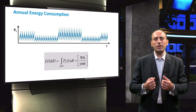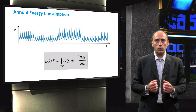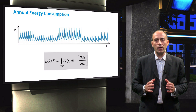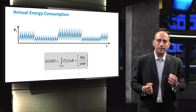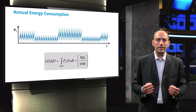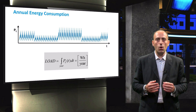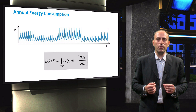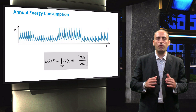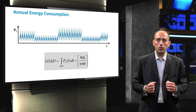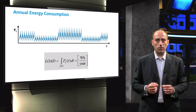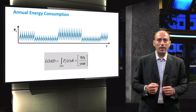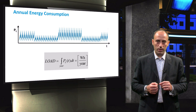After obtaining a load profile of all the loads connected to a PV system, the total energy demand over a period of time can be determined. It is calculated by integrating the instantaneous power of the loads over the considered time period. The equation shown here considers the load demand of a full year. This is an important parameter in PV system design, which will be used again in other videos. The total load demand is expressed in watt-hour per year.